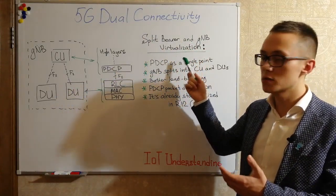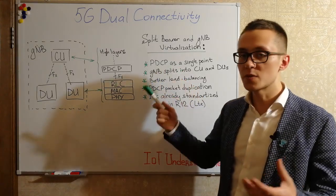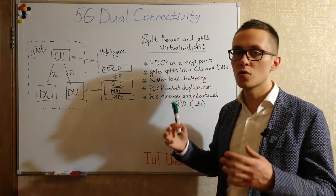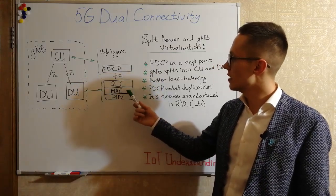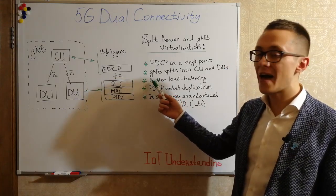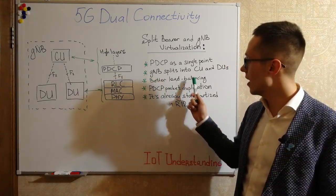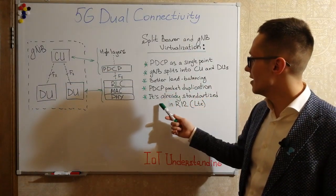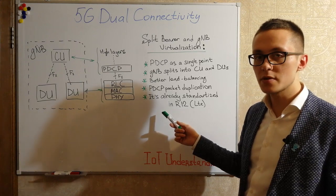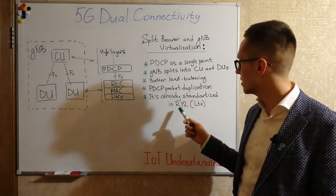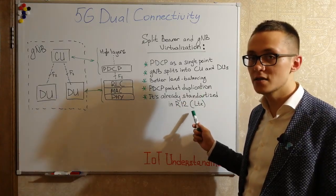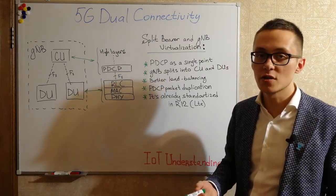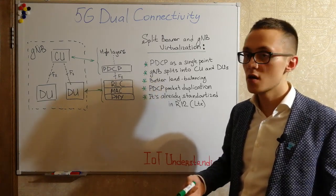This concept of splitting the radio bearer helps us to support this interesting architecture. Why do we split the bearer at the PDCP layer? In order to have a single point for controlling all other low layers, and in order to have better load balancing — to know how to balance traffic between distributed units. This split bearer technology was already standardized in Release 12 in LTE, so it was relatively easy to rethink for 5G by 3GPP and other vendors.